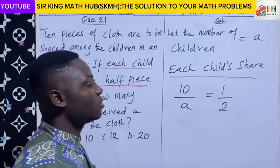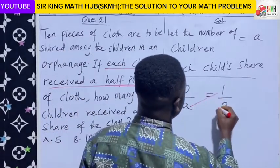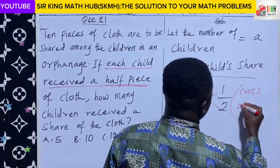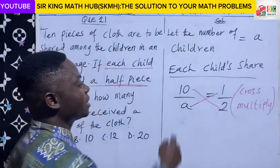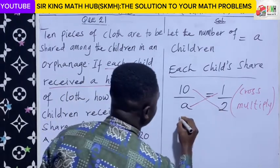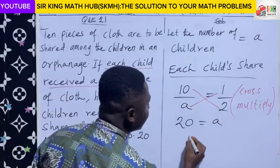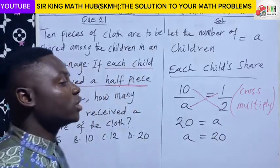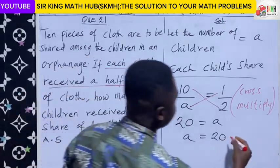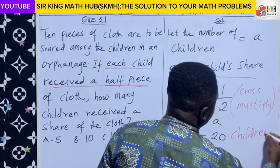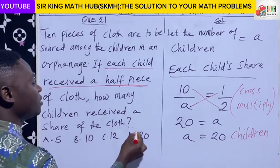We now have our equation. We are looking for A. We can simply cross multiply. 10 times 2 gives us 20, and A times 1 gives us A. So A is equal to 20. In conclusion, there are 20 children at the orphanage. Looking at the alternatives, the right answer here is D.